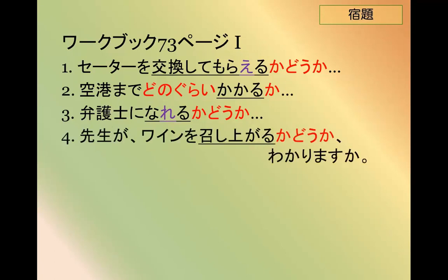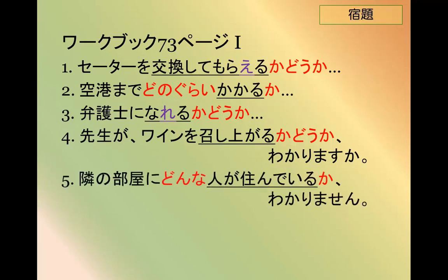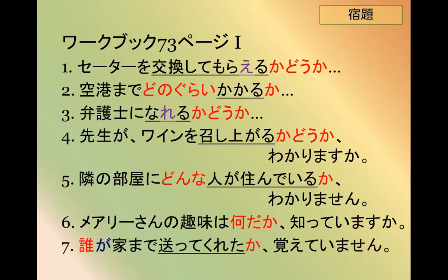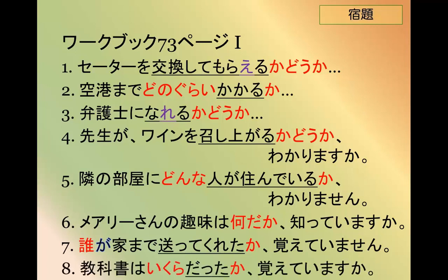Numbered practice: 先生がワインを召し上がるかどうかわかりますか — 'Do you know whether or not the teacher drinks wine?' Because it's 先生, we use the honorific 召し上がる instead of 飲む. 隣の部屋にどんな人が住んでいるかわかりません — 'I don't know what kind of person is living in the next room.' メアリーさんの趣味は何だか知ってますか — 'Do you know what Mary's hobbies are?' 誰が家まで送ってくれたか覚えてません — 'I don't remember who drove me home.' 教科書はいくらだったか覚えてますか — 'Do you remember how much the textbook was?'